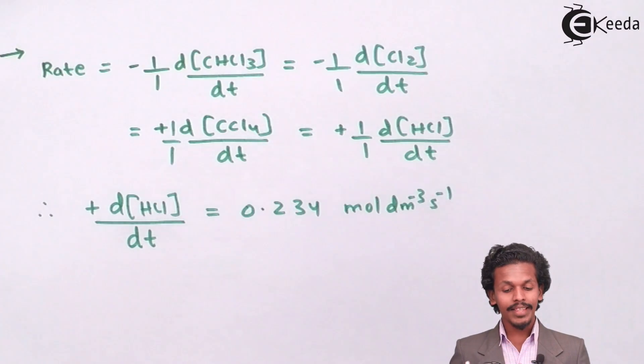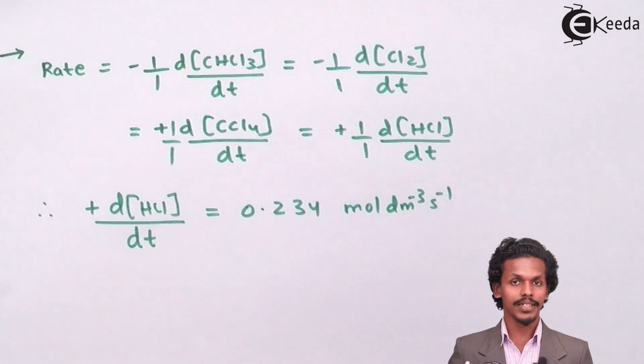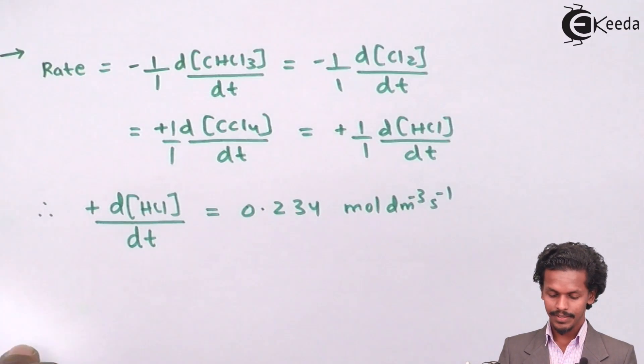0.234 moles per dm³ per second. And by knowing this data, we could find the rate of other reactants or rate of other products also. So for finding the first thing, that is,